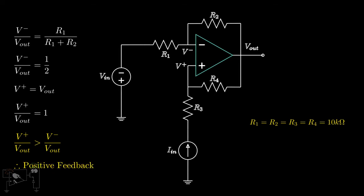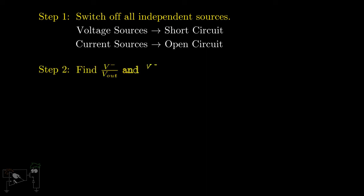To summarize, if both input terminals have a feedback path, we first turn off all independent sources. That means, replacing voltage sources with a short circuit and replacing current sources with an open circuit. Then, we find the feedback factors of both the positive and negative terminals.